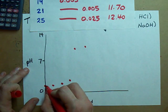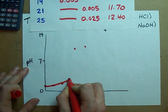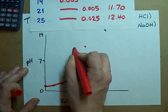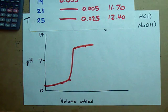So here's my curve. It went up, and then shot up, and then flattened out. Oh boy, does this look like a titration curve.